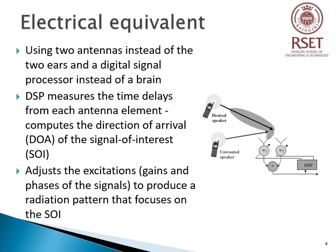The digital signal processor measures time delays from each antenna element, computes the Direction of Arrival (DOA) of the Signal of Interest (SOI), then adjusts the excitations — that is, gain and phases of the signals — to produce a radiation pattern that focuses on the signal of interest while tuning out any signal not of interest. In this example shown, they have used two antennas.